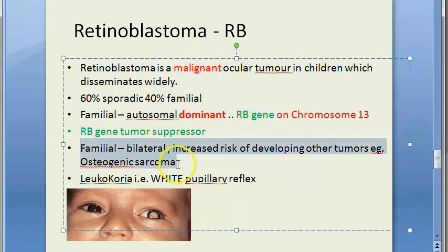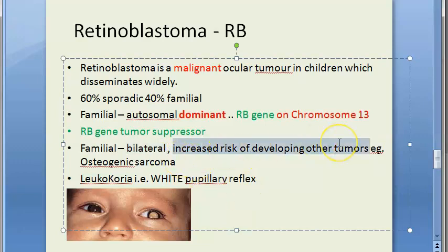If familial, retinoblastoma will be bilateral; if sporadic, it will be unilateral. There is an increased risk of developing other tumors as well. If familial and there is a problem with the RB gene, patients can develop many other carcinomas. Specifically mentioned here is osteogenic sarcoma.